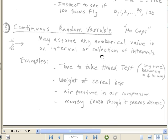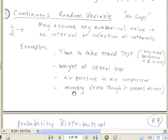Now continuous random variable, what are some examples here? Time to take a timed test. So if the test is 10 minutes, it could be between 0 and 10. But depending on the instrument used to measure it, we could get 1.5 minutes, 1.55 minutes, 1.0234 minutes. Weight of a cereal box, that's another example of continuous random variable. Depending on the measurement, air pressure in an air compressor. An air compressor usually will explode at some upper limit, so it would be 0 to that upper limit, but anything in between is possible.